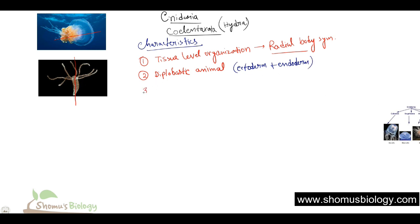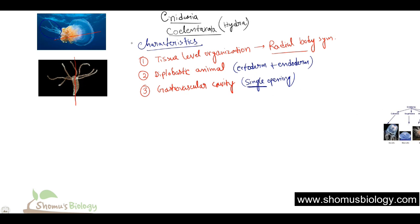The third property is that they have a gastrovascular cavity. Although they have this cavity, it has only a single opening. This single opening helps them to engulf food and also to defecate — they use the same single port for both eating and defecating. The mouth or that single opening is surrounded by tentacles, which are present in all examples of Cnidaria, including jellyfish and Hydra.